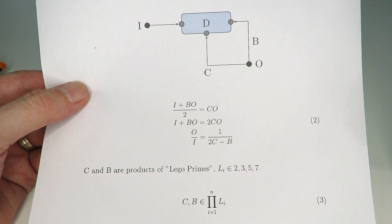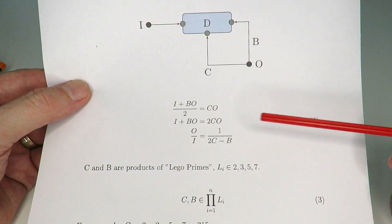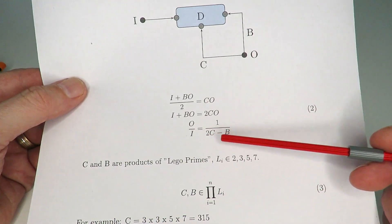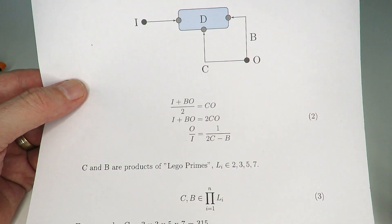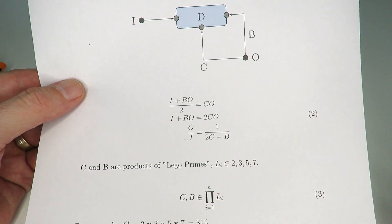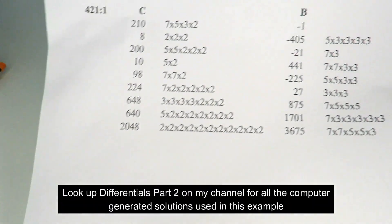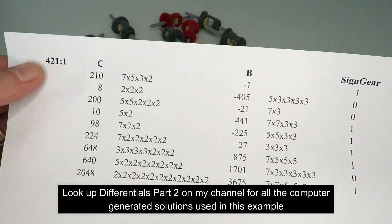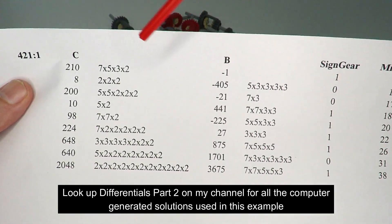To design a particular 1-to-n gear ratio we just need to solve the equation 2C − B = n, where n is the prime we want to create. I've generated a number of computer-generated solutions for n = 421.